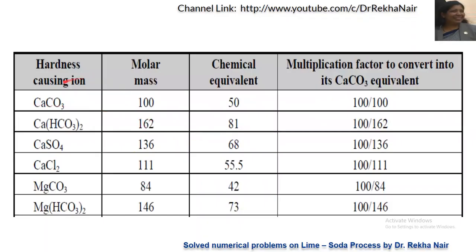Let us calculate the multiplication factor for calcium carbonate. Its molecular weight is 100: calcium (atomic mass 40) + carbon (atomic mass 12) + oxygen (16×3 = 48), giving 40+12+48 = 100. Its equivalent weight = molecular weight ÷ valency.